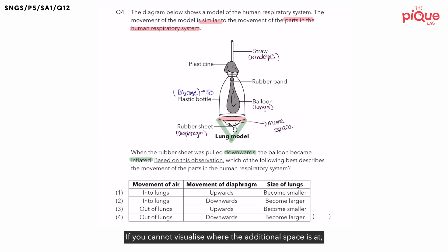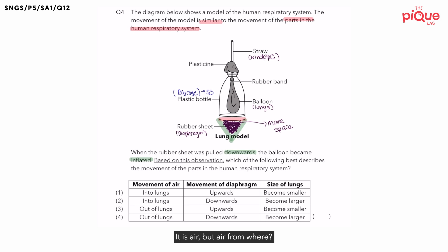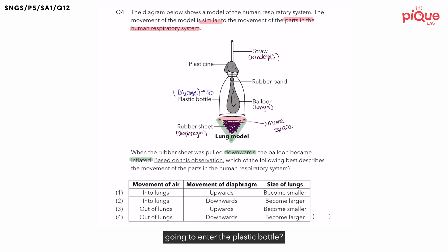If you cannot visualize where the additional space is, let me shade it for you. The part shaded in purple is where the additional space is. What object will take up this additional space? It is air — but air from where? Air from the surrounding. And how is the air from the surrounding going to enter the plastic bottle? Air from the surrounding will enter through the straw, and then air will be transported from the surrounding into the balloon.